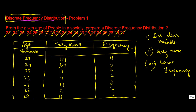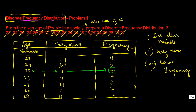You can easily interpret this. For example, if someone asks how many people in the society have an age of 25, you go to the 25 row and see the frequency is 2. So you can say there are two people in the society who are of the age 25.